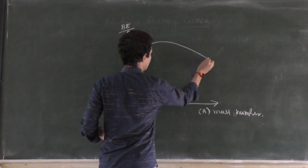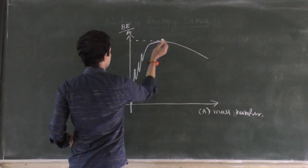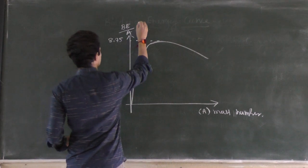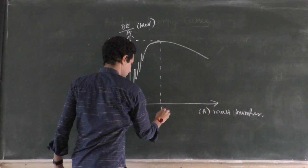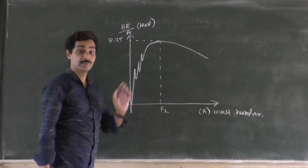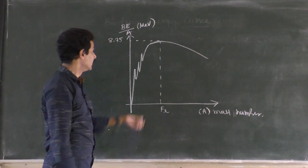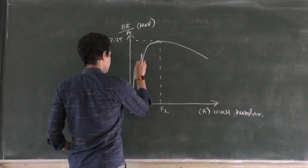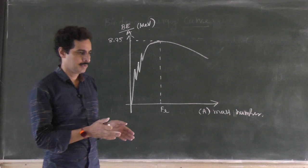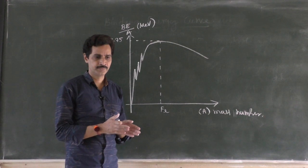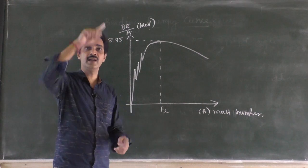This binding energy per nucleon curve versus mass number is a very important graph — it gave answers to many unanswered questions in nature. The highest binding energy per nucleon is 8.75 MeV, and this lies for iron. Iron is the strongest element; even calcium is strong. Their specific binding energy is very high — the highest. There are some spikes showing that binding energy per nucleon does not vary smoothly with neighboring elements.